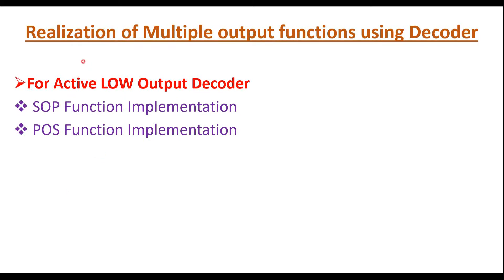In this video I will discuss how to realize multiple output functions using a decoder. In a previous lecture I explained how to realize multiple output functions using active high output decoders. In this video I will explain how to implement or realize multiple functions using an active low output decoder. We can implement SOP functions and POS functions using an active low output decoder.